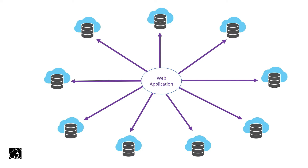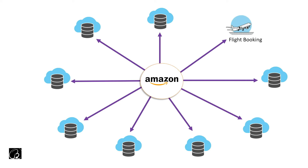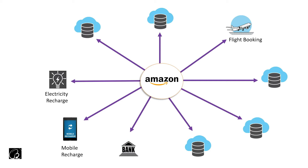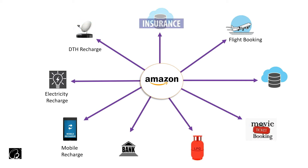Let's be very specific. Let's say the web application I'm talking about is Amazon. Amazon wants to integrate multiple features — for example, an interface where you can book a flight from some airline using third-party APIs that communicate with an airline server. You can recharge your electricity bill, do banking stuff, do mobile recharge, book a cylinder, book movie tickets, DTH, insurance, or even donate through Amazon.